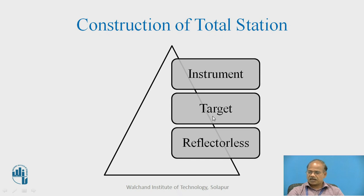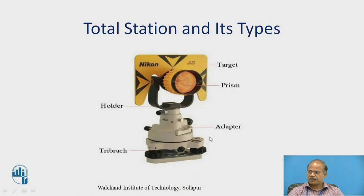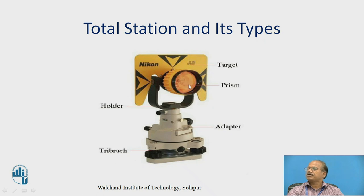There is a target which is also called the reflector — there are several types of reflectors. There are stickers, small reflectors, and large reflectors which can be supported with supporting rods. There is specific information about how the prism or reflector is constructed — there is a holder, the prism through which reflection happens, an adapter, and a tribrach.